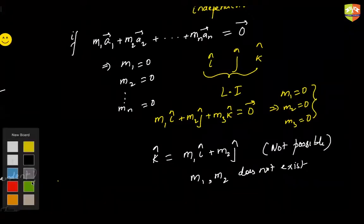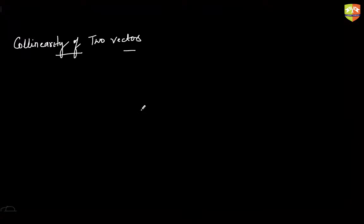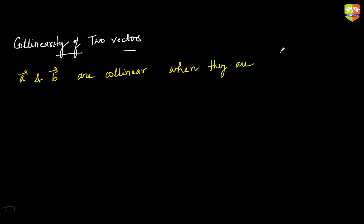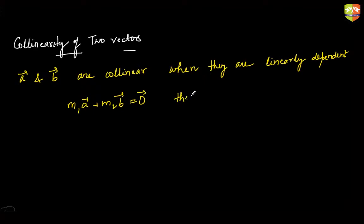We are now going to study collinearity of two vectors. Collinearity means they are parallel. We say vector a and vector b are collinear when they are linearly dependent. The meaning of linearly dependent is that if you do m1·a plus m2·b equal to the null vector, then m1 and m2 are not all zero.